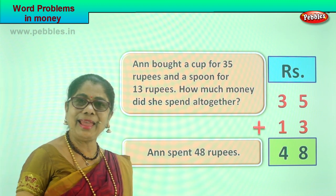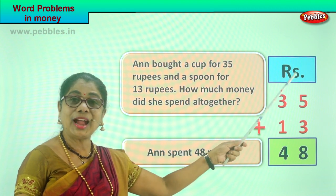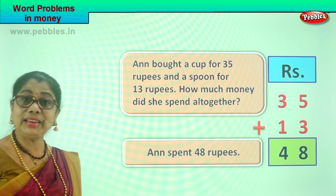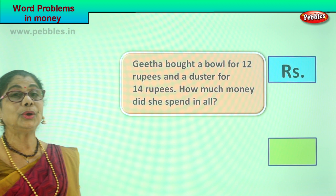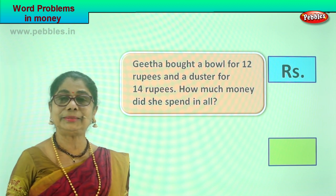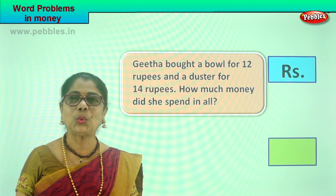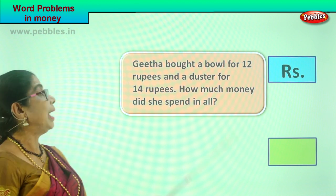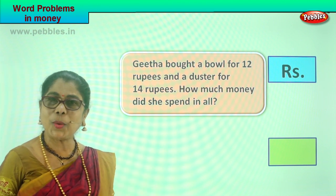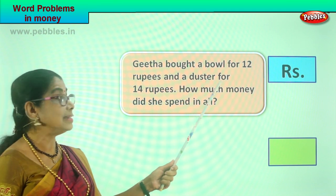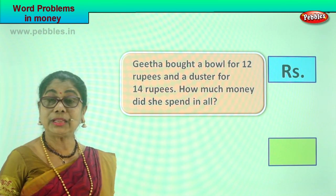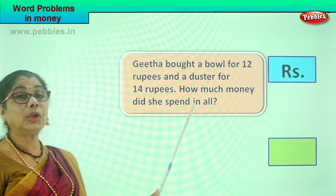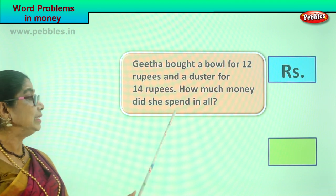Did you enjoy shopping with Anne? Did you enjoy how to add, how to find the total amount spent? Shall we take another problem? Who is shopping today? Here is Geeta. Geeta is going shopping with her mama. She went into a shop and bought a bowl for rupees 12 and then a duster for rupees 14. She bought a bowl and a duster.